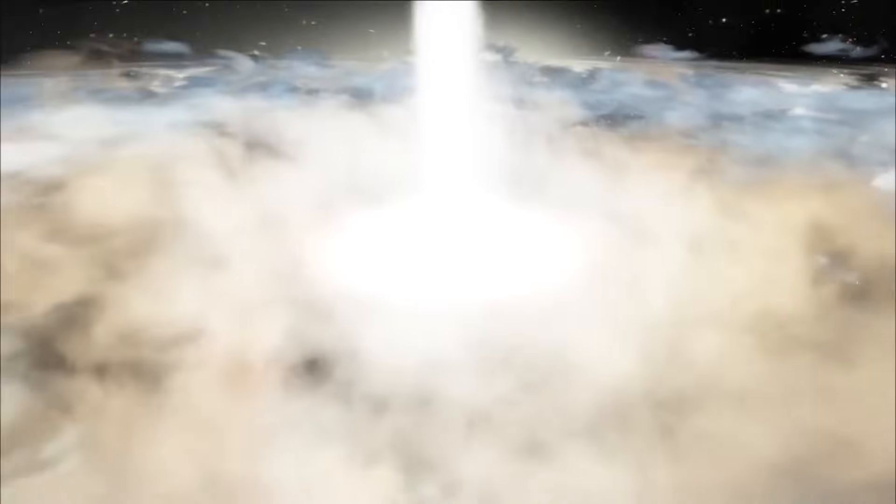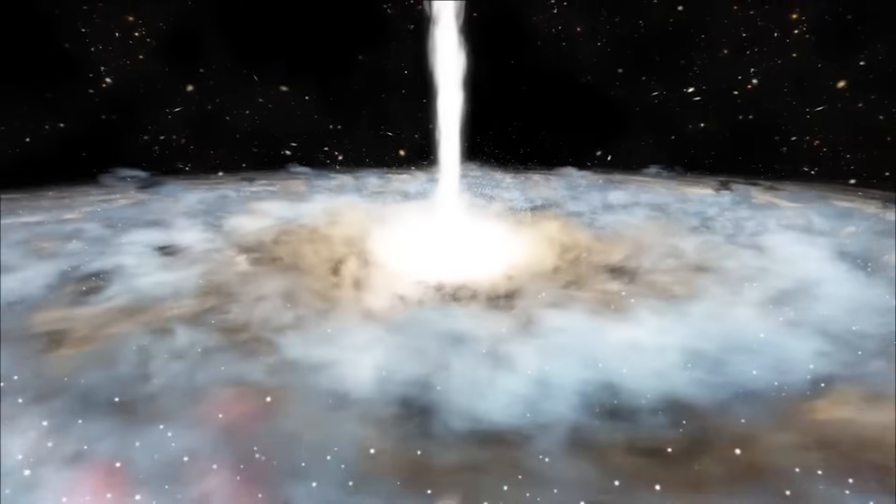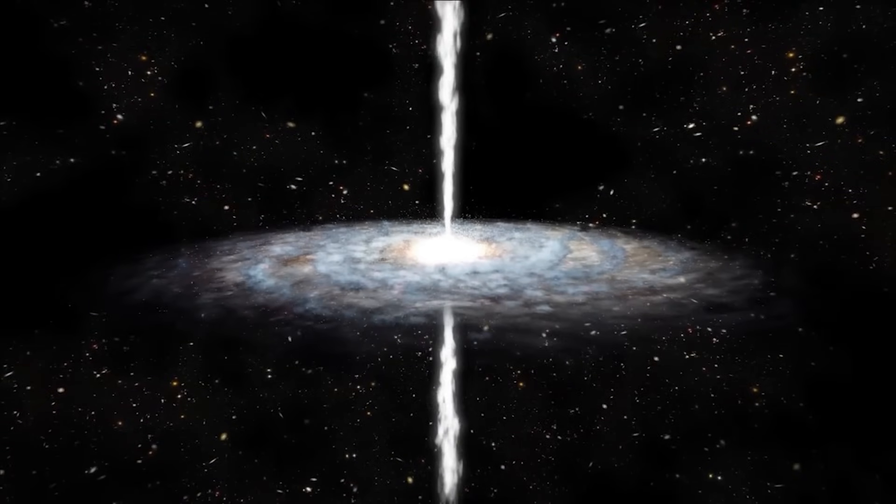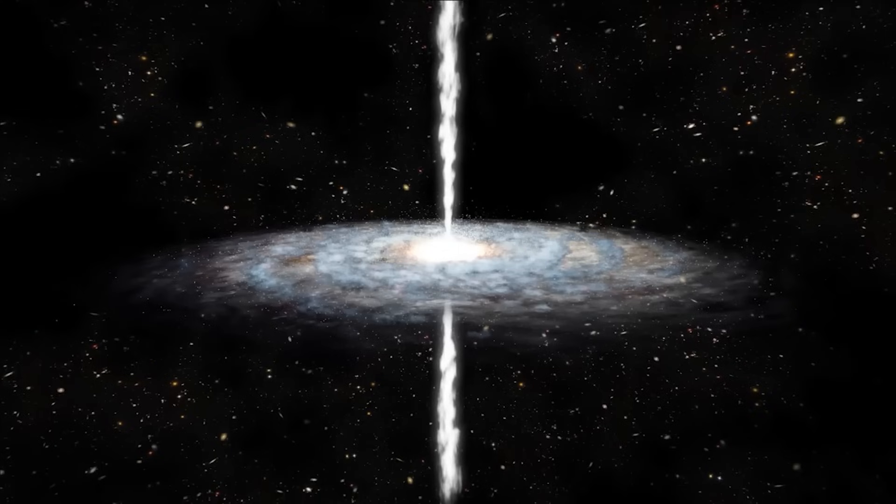One of the most interesting aspects of white holes is their possible relationship to black holes. Some scientists have proposed the idea of a wormhole connecting a black hole and a white hole, suggesting that they could be different manifestations of a unified phenomenon. According to this idea, matter falling into a black hole could emerge from a white hole in a different region of spacetime or even in another universe.